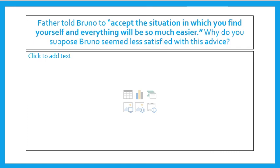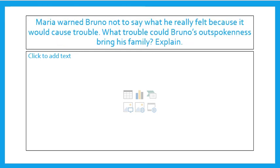Father told Bruno to 'accept the situation in which you find yourself, and everything will be so much easier.' Why do you suppose Bruno seemed less satisfied with that advice? Maria warned Bruno not to say what he really felt, because it could cause trouble. What trouble could Bruno's outspokenness bring his family? Think back to the slide where Mother gets nervous about Maria overhearing her, and explain why Bruno speaking his mind specifically about the commandant and the work he's doing could cause trouble.